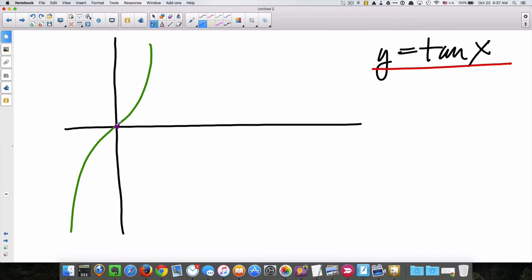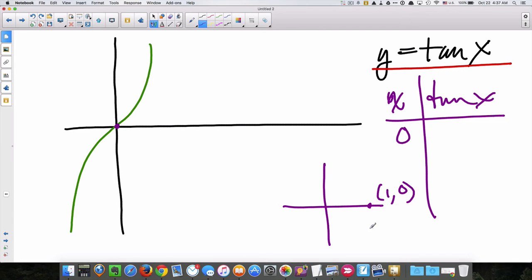Without any translation, y equals tangent x goes right through the origin right there, because if I plot points, just to be explanatory, if I put 0 in for x, remember the unit circle, 0 has the point 1 comma 0, and tangent is y over x, that means I'm going to get 0 over 1, which is 0.